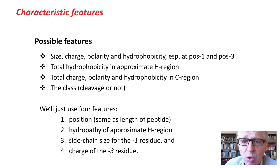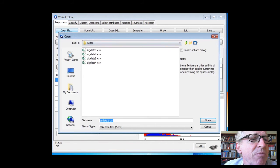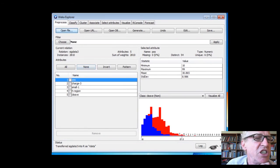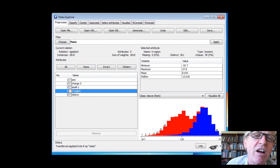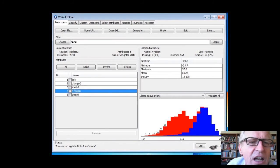In fact, I've created a data set which just includes the following four features. The position, as we had before, is the same as the length in the previous data set. The overall hydropathy of the approximate H region, the side chain size for the minus one residue, and the charge of the minus three residue. So if we go back to WEKA here, we'll just load in the file. Three is the one I prepared here. I'll just load it in, and here we can see the position, the charge at the minus three position, whether or not it's small in the minus one position, and the overall hydrophobicity here. The H region, which you'll see is a numeric value. There are charts of general hydrophobicity for amino acids, and I've just summed them up for a region upstream of the cleavage site.